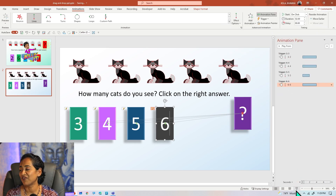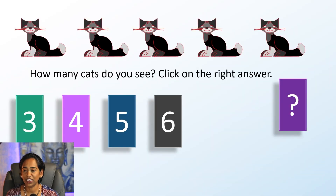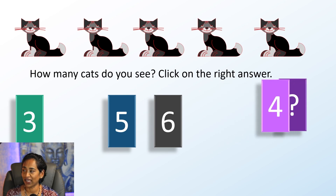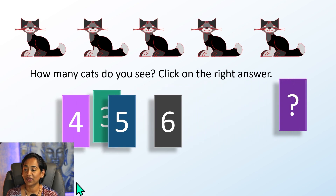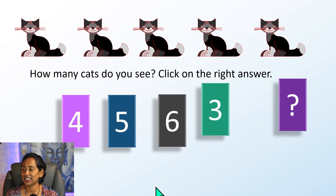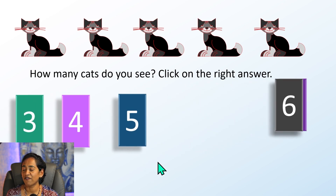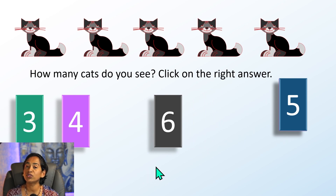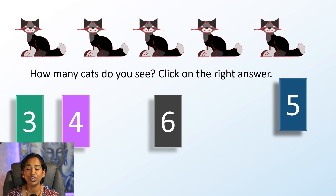Now let's go ahead and see if it works. I'll click on Slideshow. When I click on four — there you go, four is working. Let's click on three — three is working. Six — six is working. Five — five is working. And because five is the right answer, five stays. But I also want to add some kind of celebration or emoji that says 'Good job — that's the right answer,' so my students know.